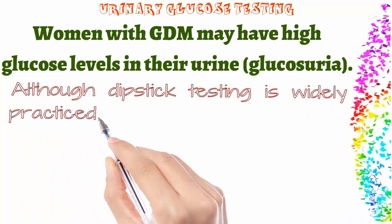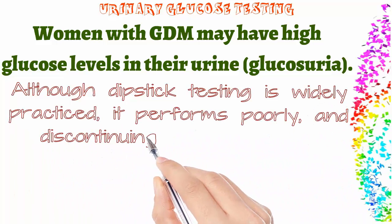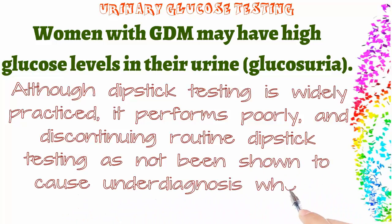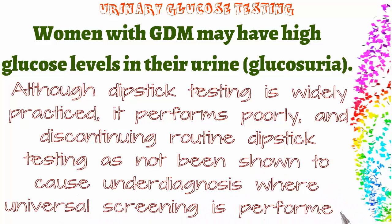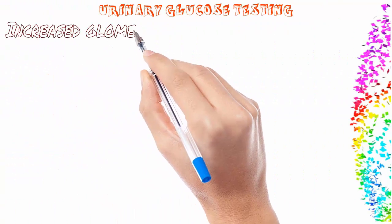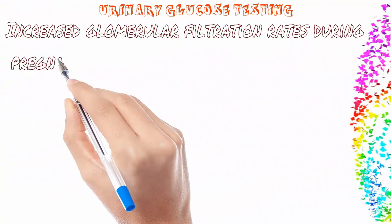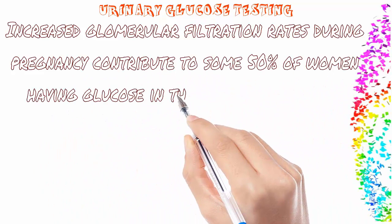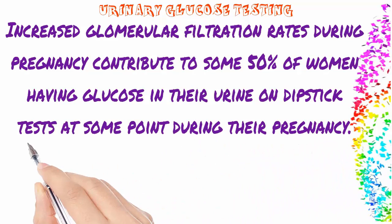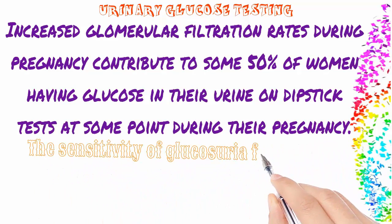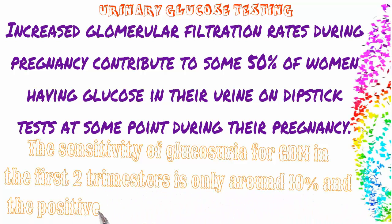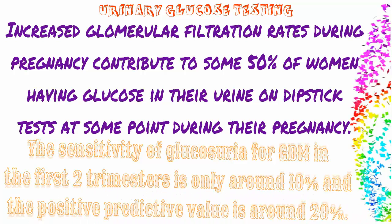Urinary glucose testing: women with GDM may have high glucose levels in their urine — glucosuria. Although dipstick testing is widely practiced, it performs poorly, and discontinuing routine dipstick testing has not been shown to cause under-diagnosis where universal screening is performed. Increased glomerular filtration rates during pregnancy contribute to some 50% of women having glucose in their urine on dipstick tests at some point during their pregnancy. The sensitivity of glucosuria for GDM in the first two trimesters is only around 10%, and the positive predictive value is around 20%.